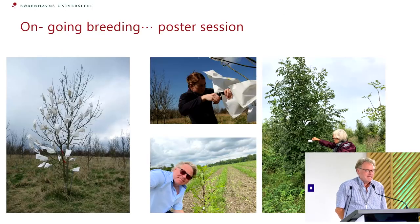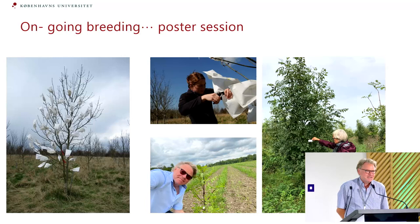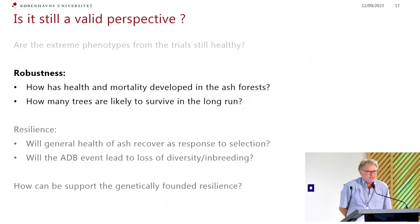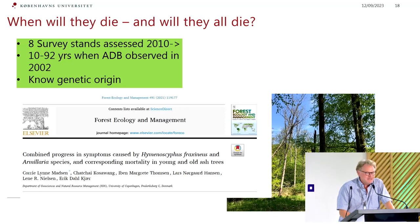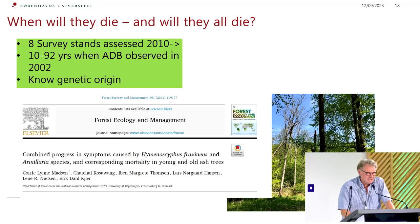I will not talk much about the genetic studies and breeding here because there is a poster session on the breeding of ash. Instead I will go to what actually happened in the forest. We have been surveying eight populations since 2010. Each of these populations has 50 trees from a similar region but different sites. The paper was published recently — the co-authors and first author preferred to call it 'Combined Progress in Symptoms Caused by Hymenoscyphus fraxineus, Anamorph Species, and Corresponding Mortality in Young and Old Trees.'